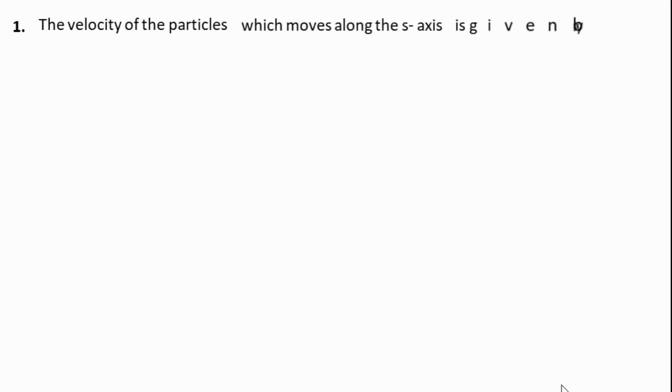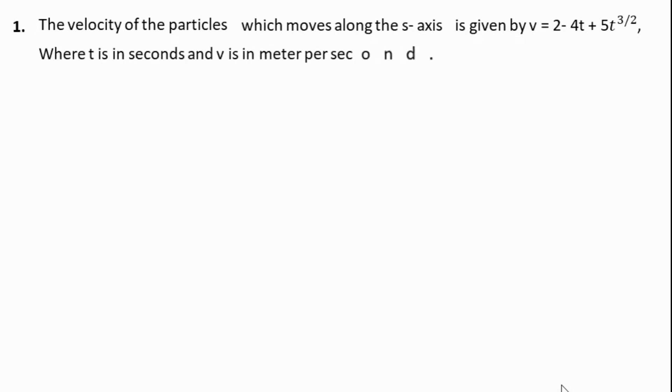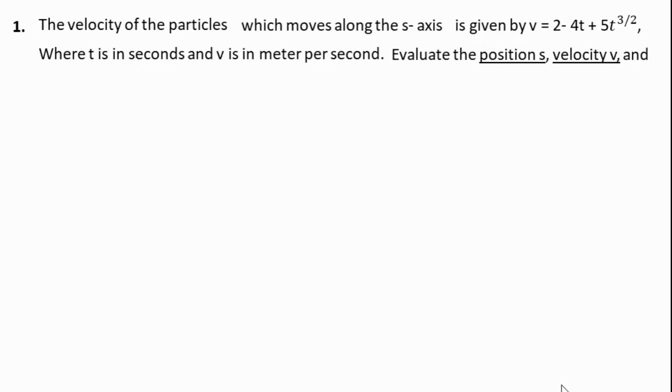Hello everyone. This is dynamics, or engineering mechanics. The velocity of a particle moving along the S-axis is given by v = 2 - 4t + 5t^(3/2), where t is in seconds and v is in meters per second. We are required to calculate the position s, velocity v, and acceleration a when t is equal to 3 seconds.